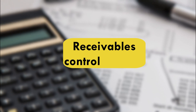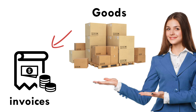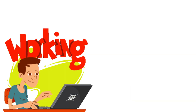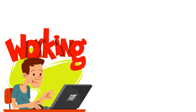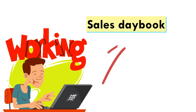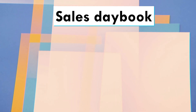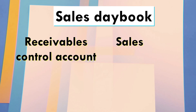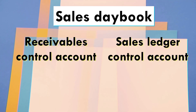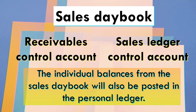When we sell goods to our customers on credit, we'll issue them with invoices to request for payment. The data from the invoices will then be extracted and recorded in the book of Prime Entry called Sales Day Book. The figures in this book will be summed up and posted in the general or nominal ledger called Receivables or Sales Ledger Control Account. The individual balances from the Sales Day Book will be posted in the personal ledger.